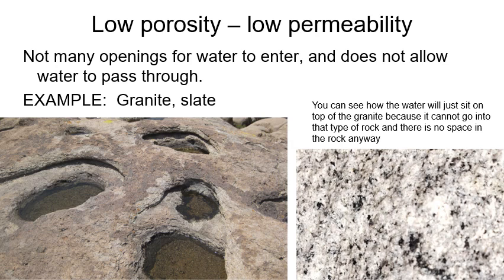Here's an example of a natural material with low porosity — it's not very porous, doesn't have much space to hold water, and it's not very permeable. This is the top of Stone Mountain, made of granite. When it rains on Stone Mountain, the water can't get into the granite, so it just sits on top. If you look at granite up close, there are no open spaces — nowhere for the water to go. So this has low porosity and low permeability.